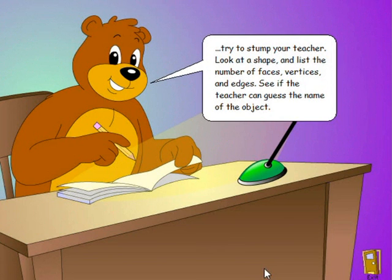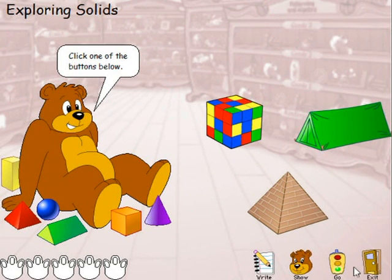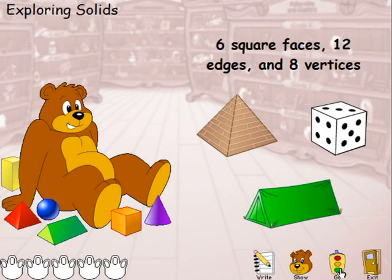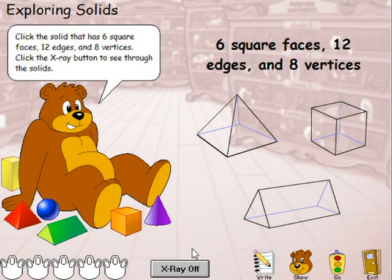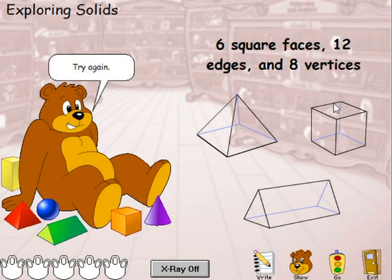We click on Go. Click the solid that has five faces, nine edges, and six vertices. Click the X-ray button to see through the solids. We can also click on the X-ray and actually go and count the faces, the edges, and the vertices of each of these objects. After trying an incorrect answer and then a correct one, the activity confirms: 'You got it.'